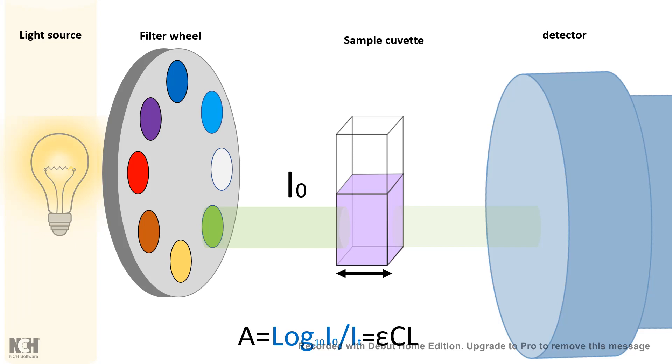Now let's say the intensity of the light which is falling on the sample is I0 and after passing through the sample its intensity is It or let's say only I.